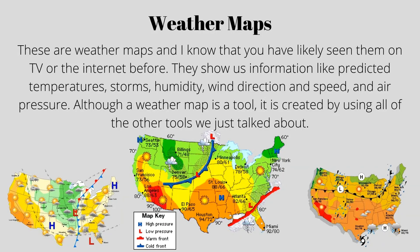These are weather maps, and I know that you have likely seen them on TV or the internet before. They show us information like predicted temperatures, storms, humidity, wind direction and speed, and air pressure. Although a weather map is a tool, it is created by using all of the other tools that we just talked about.